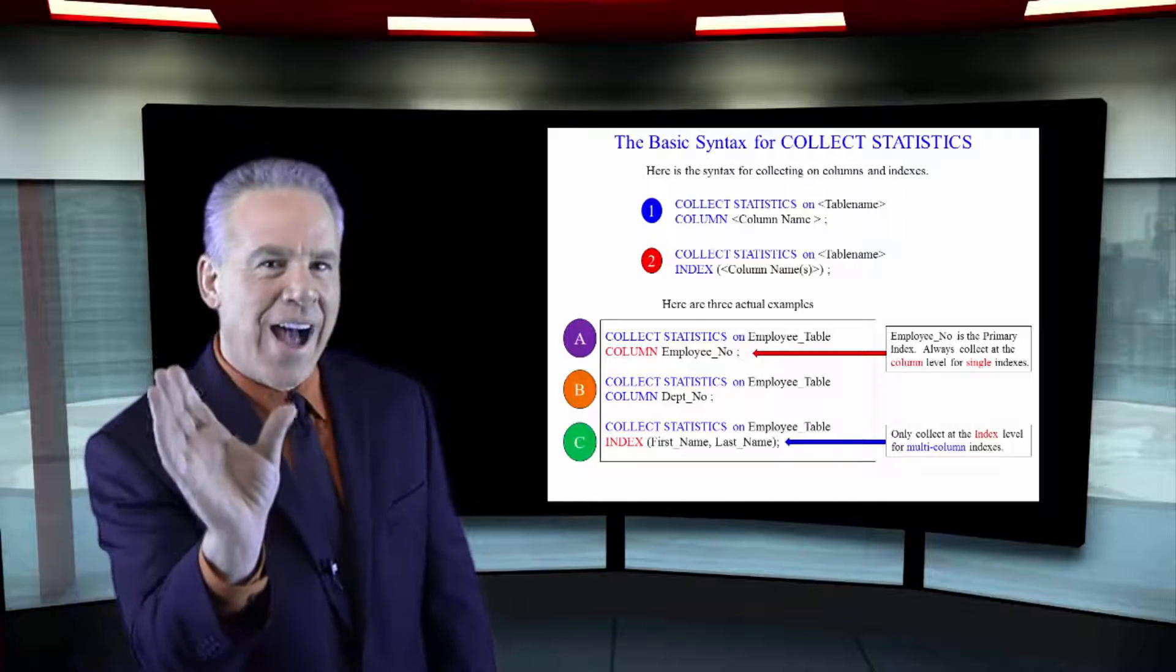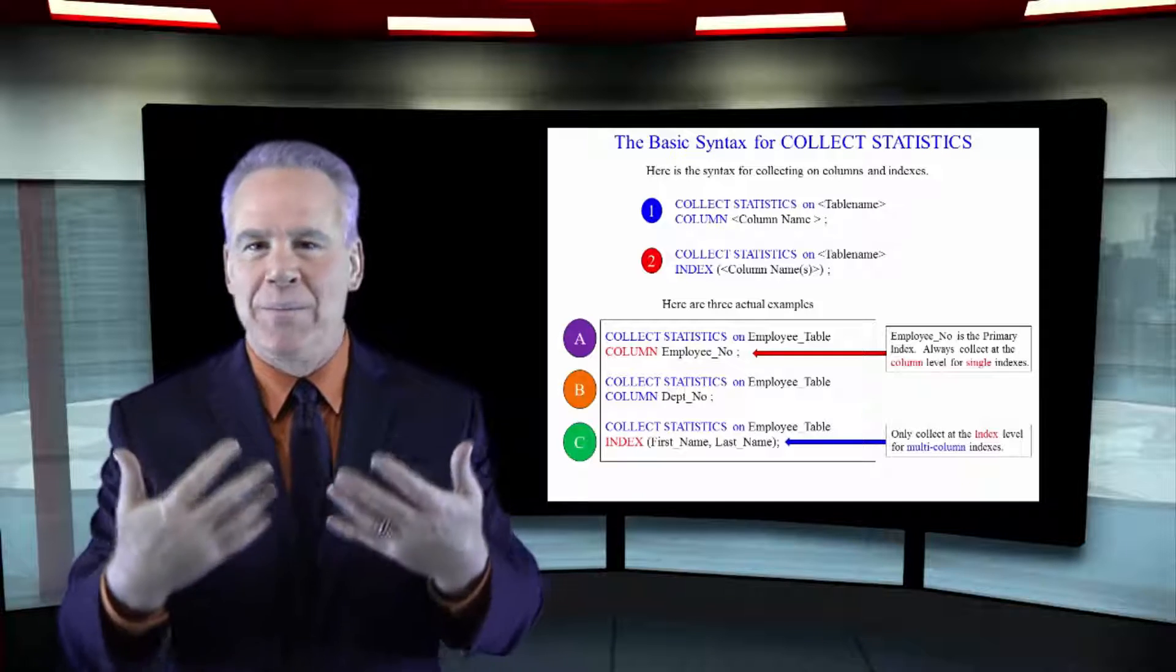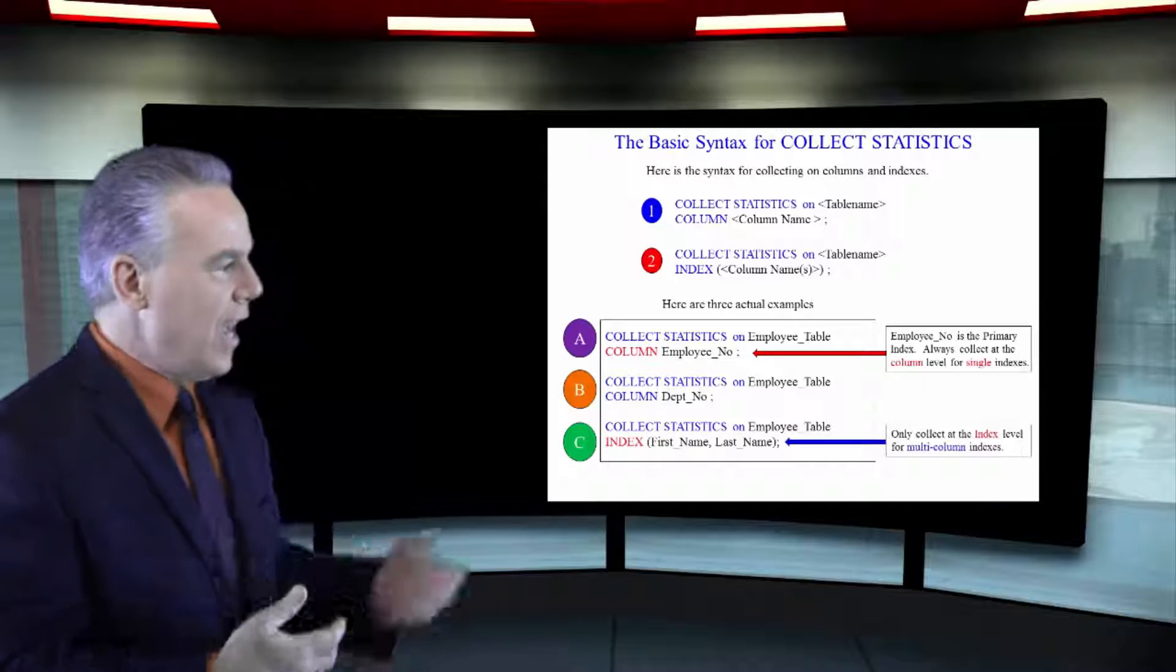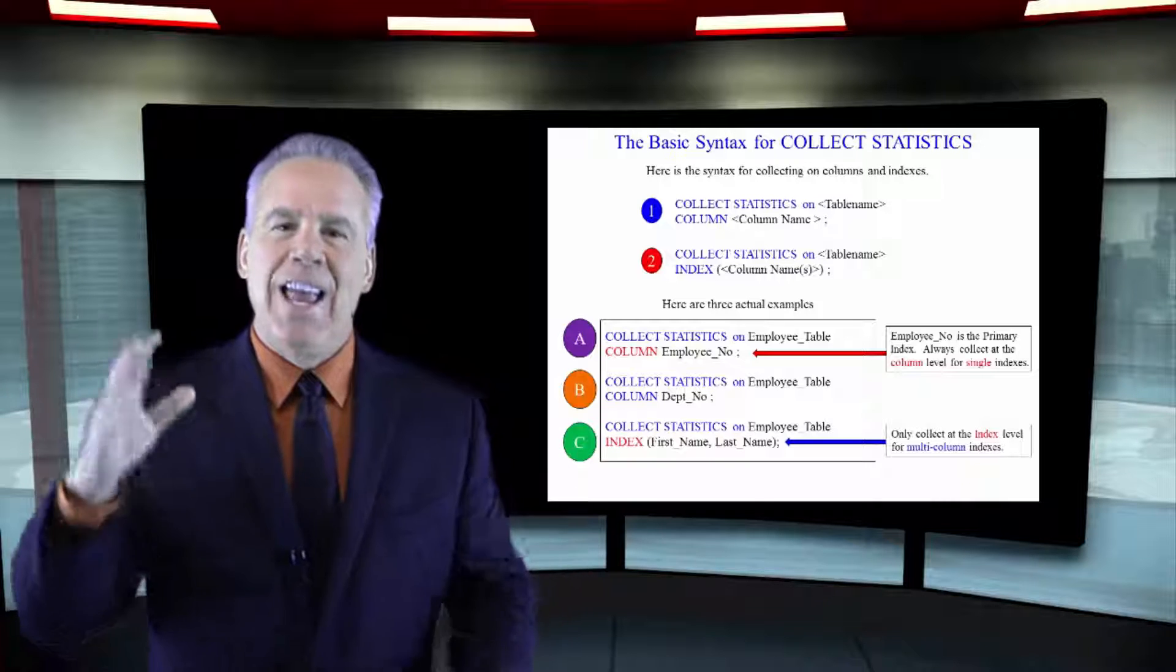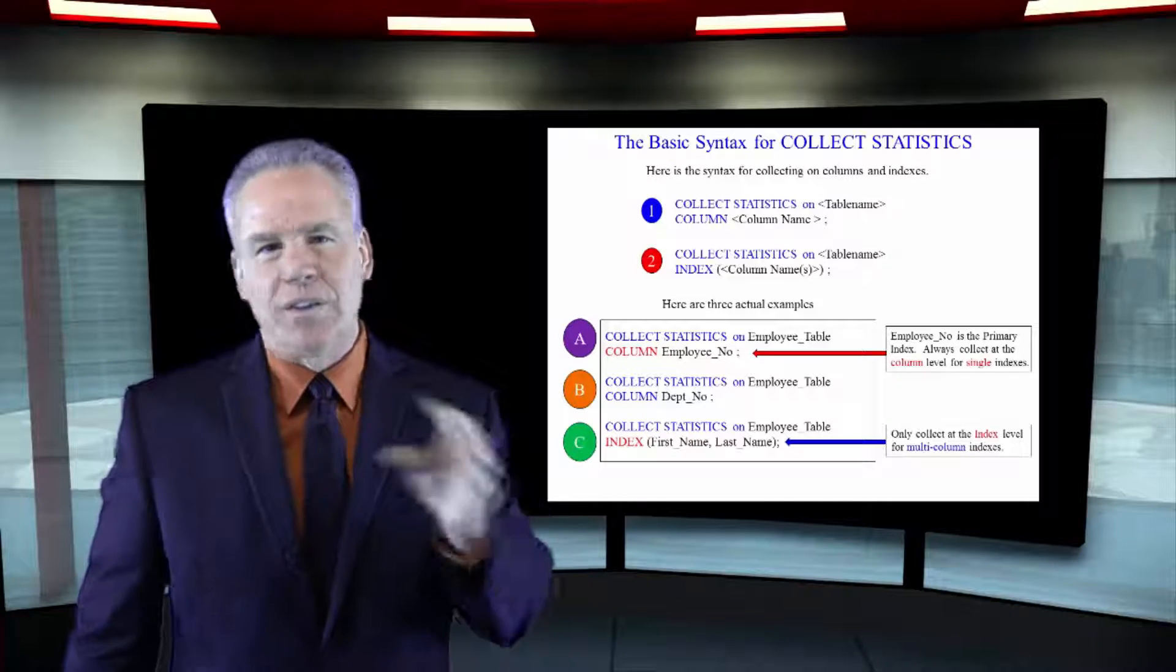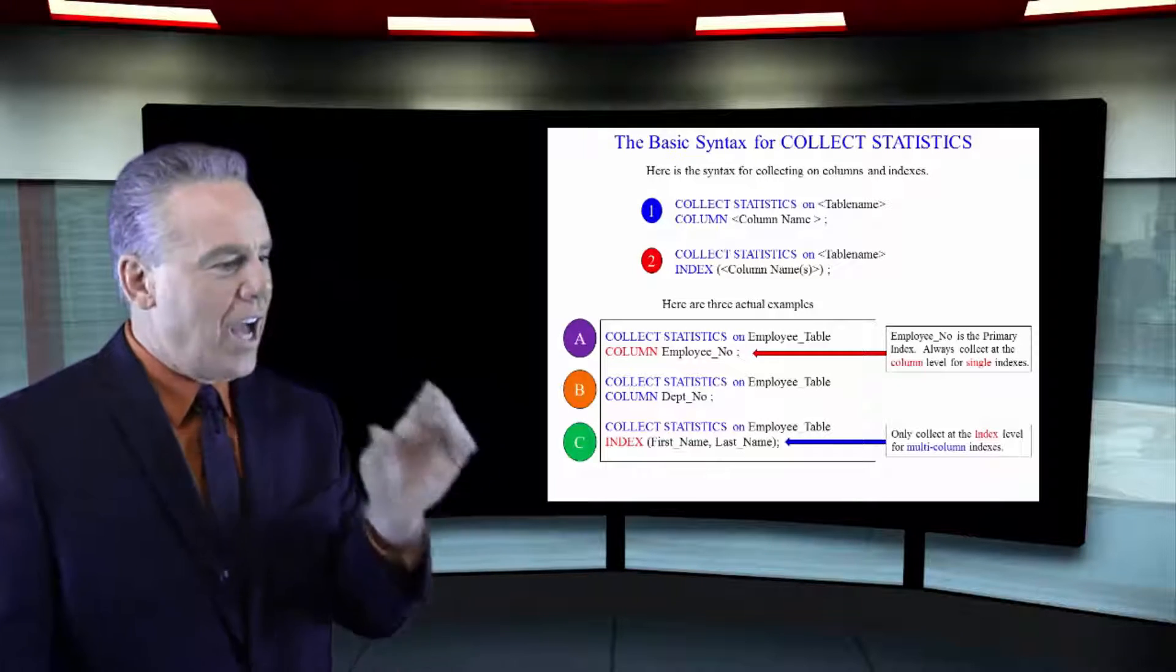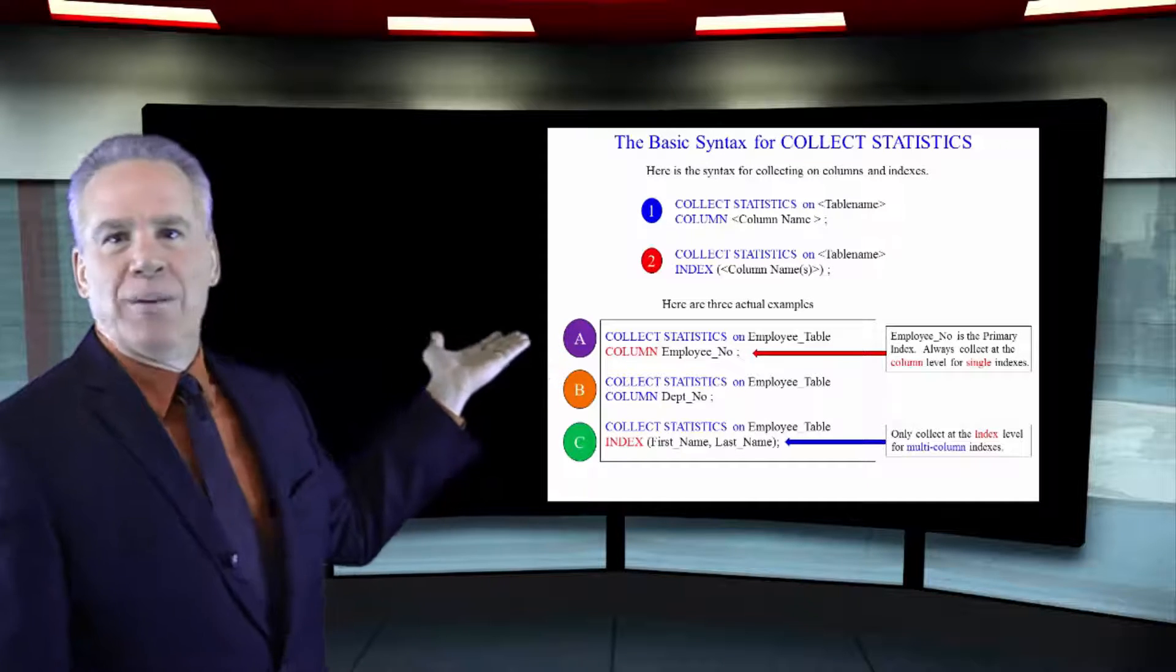It's a single column index. So, anytime you have a single column index, you always say column because sometimes indexes are dropped if they're secondary indexes and those statistics could be gone. So, the bottom line rule is if you're going to collect statistics on any single entity, you always use this column format, even if it's an index.